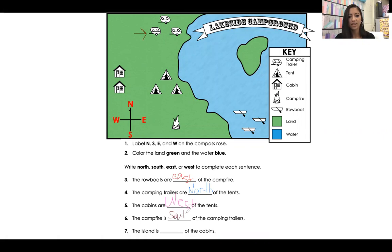And finally, the island, which is out here, is blank of the cabins. Here are the cabins. What is the correct answer? It is east of the cabins.